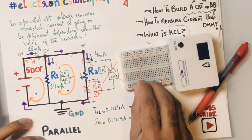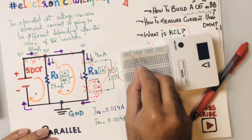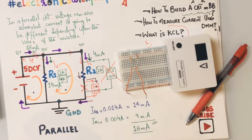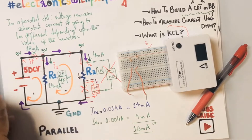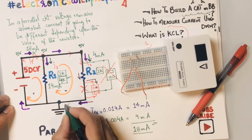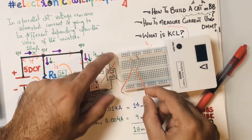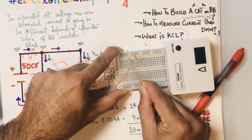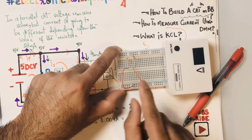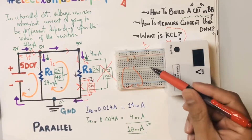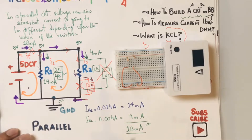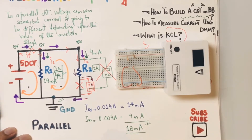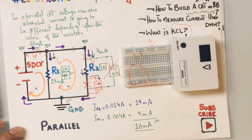Let's now make this circuit. These are just resistors of some random values. Five volts going into R1, five volts going into R2. This end of each resistor is connected to ground. I can connect a wire to the blue rail which is ground, and similarly connect this one. These columns are vertically connected. This is one way — it looks very similar to how it appears on the paper.